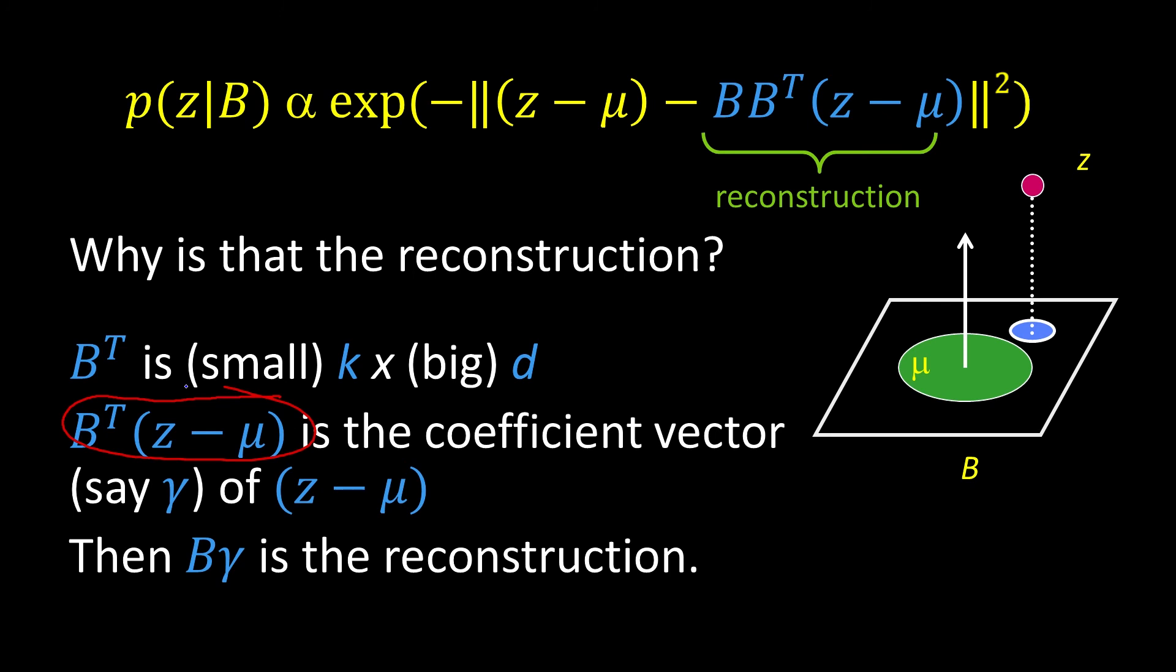That's just the coefficient vector. So this thing right there, B transpose z minus mu, that's the coefficient vector. And we can call that gamma. Well, given the coefficient vector, I can reconstruct. How do I do that? I just multiply that,